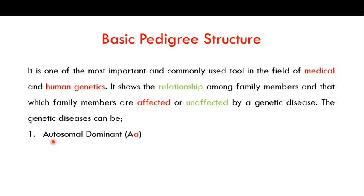Autosomal means the gene is present on chromosomes number 1 to 22, so it can be present on any chromosome between 1 and 22, but it will not be present on the X or Y chromosome. In simple terms, the gene responsible for this autosomal genetic disorder is present on the non-sex chromosomes. When we use the term dominant, it means only a single copy of the abnormal allele is enough to cause the genetic disorder.